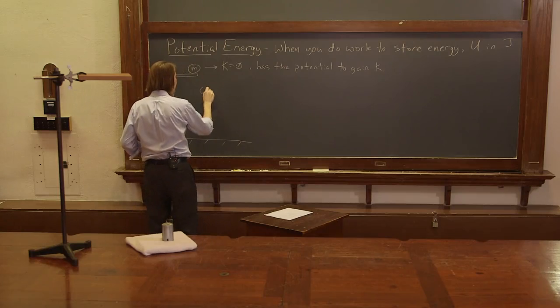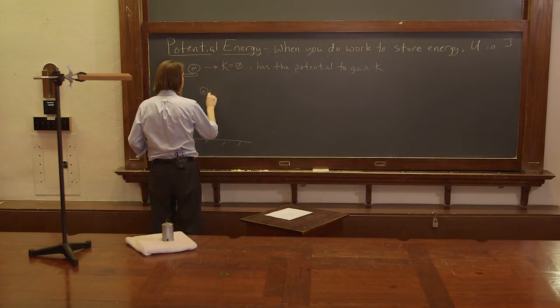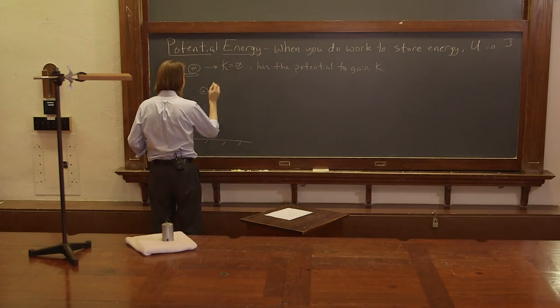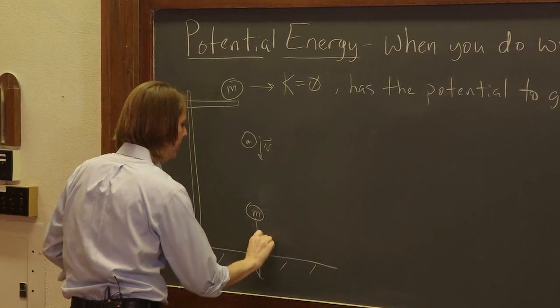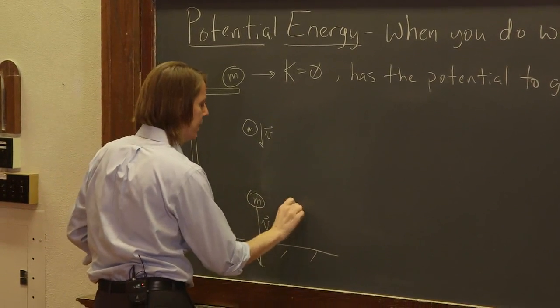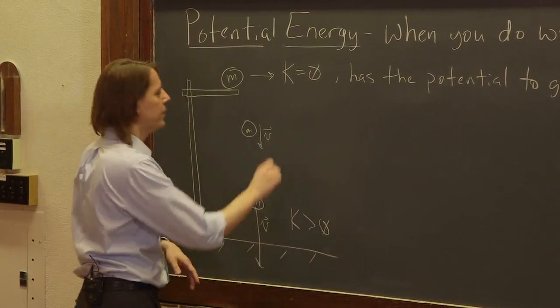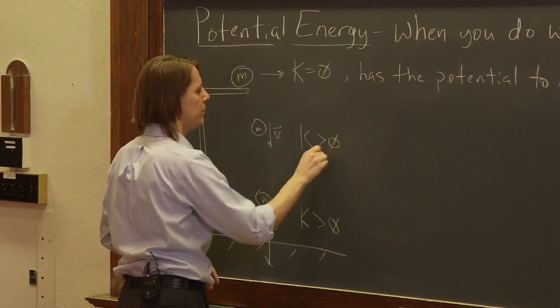So it begins to fall, it picks up a velocity, and as it falls, of course, due to gravity, it goes faster and faster. So the mass has a big velocity. So here, k is greater than zero, and here as well, k is greater than zero.